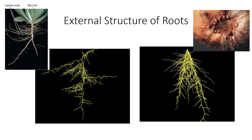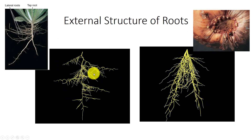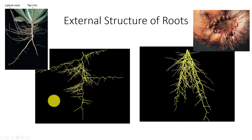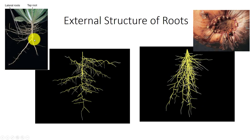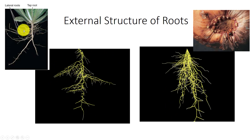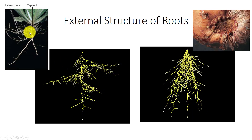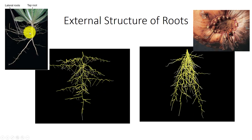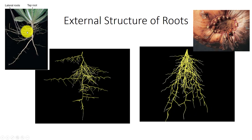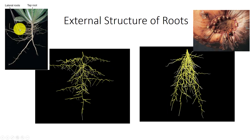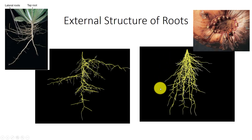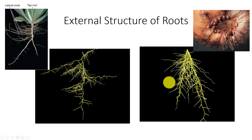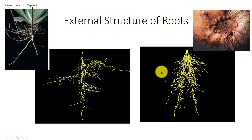Most seed plants have a single large taproot that develops from the radicle, an embryonic root. Numerous small lateral roots or branch roots emerge from it, as you can see in this tobacco seedling. Lateral roots may also produce even more lateral roots, resulting in a highly branched root system. These form a mass of many similarly sized roots that are adventitious in nature.